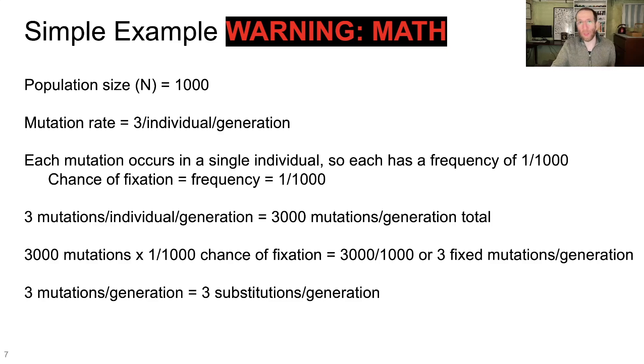In other words, three substitutions per generation. When there's no natural selection operating, we get three mutations per generation as a mutation rate, and three substitutions per generation as a substitution rate. But again, this is only going to be the case if there's no natural selection.